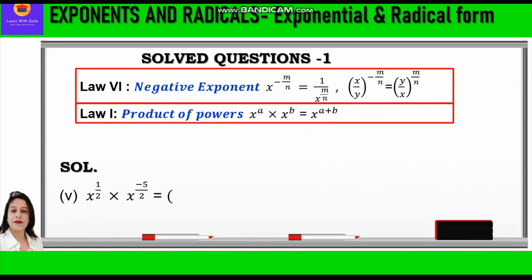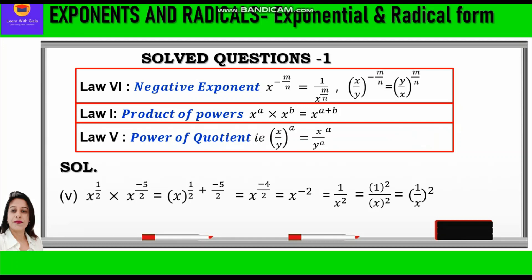Fifth part: x raised to power half times x raised to power minus 5 by 2. By the first law — product of powers — we add the exponents, giving x raised to power (half plus minus 5 by 2). Taking the LCM, we get x raised to power minus 4 by 2, which simplifies to x raised to power minus 2. Applying Law 6 to convert to a positive exponent gives 1 upon x squared. Then applying the fifth law — power of quotient — we write (1 by x) whole squared.